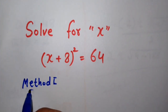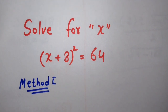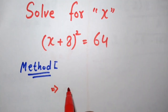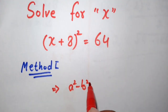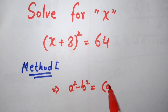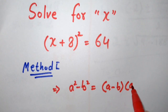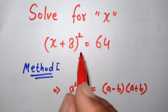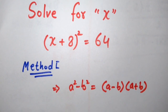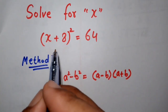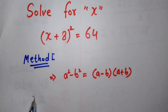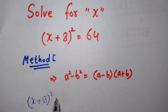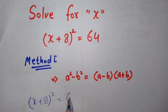Method number one: to solve this we have to use the identity a² - b² = (a - b)(a + b). By using this identity we can solve this question. The question is (x + 8)² = 64.